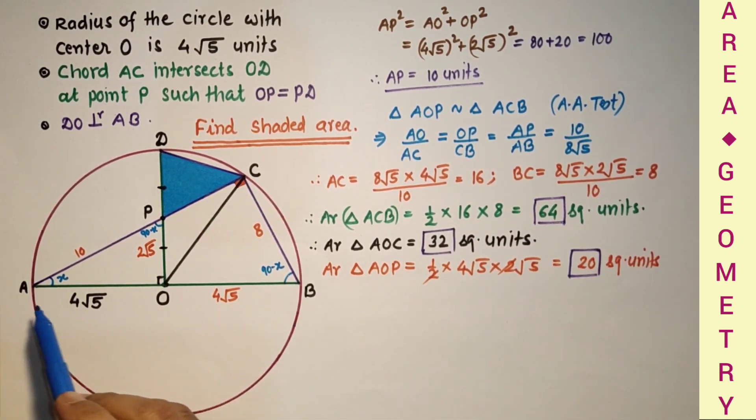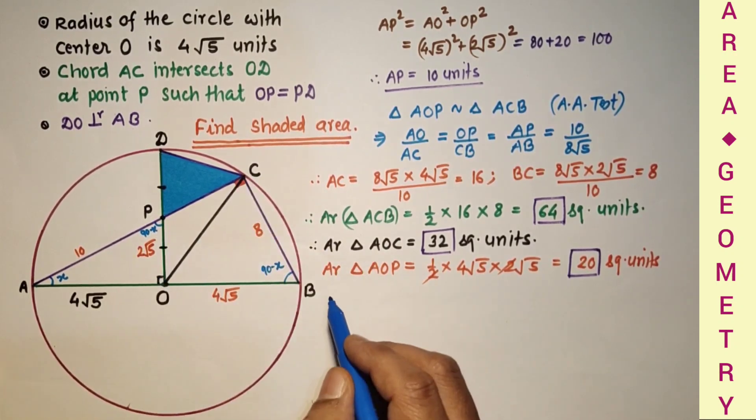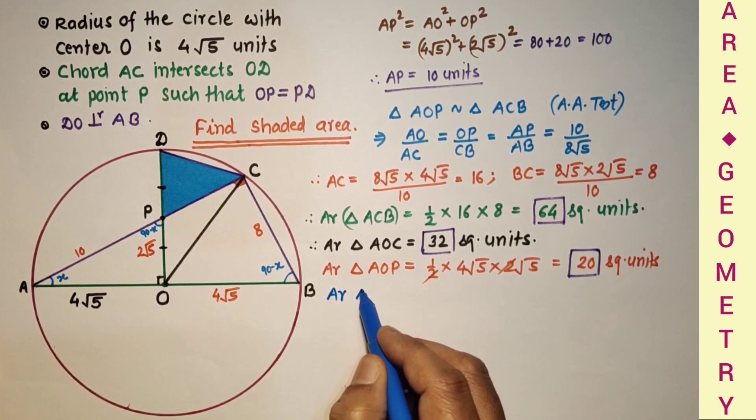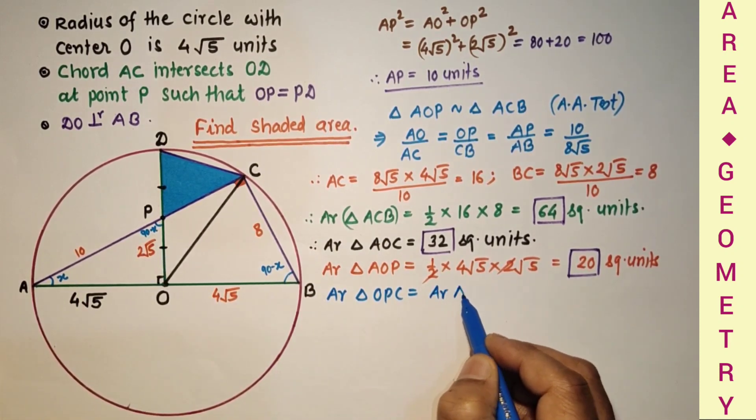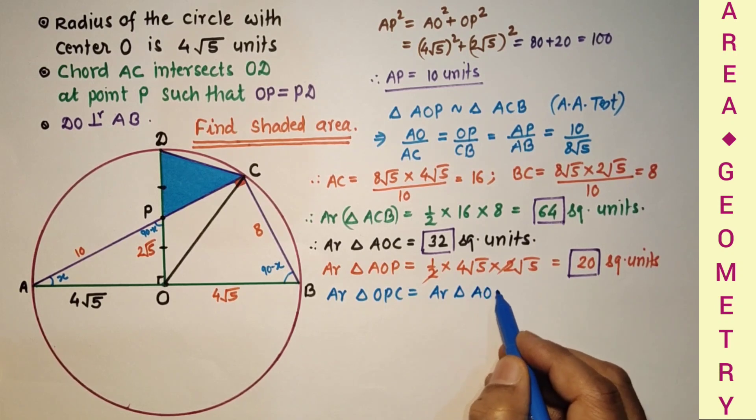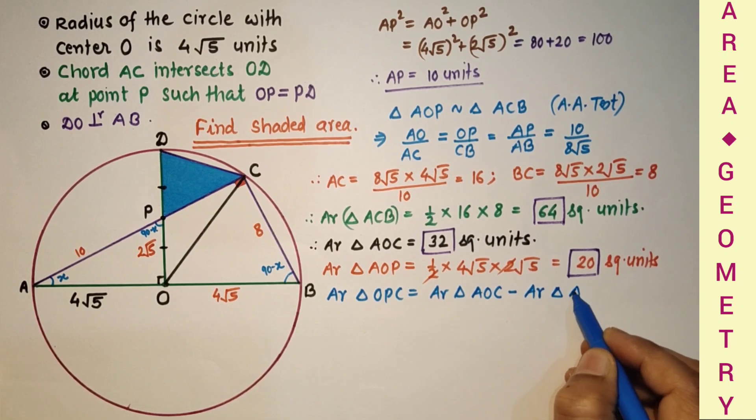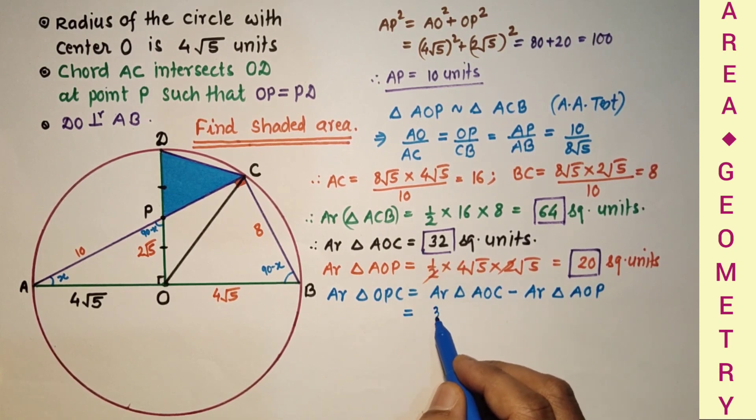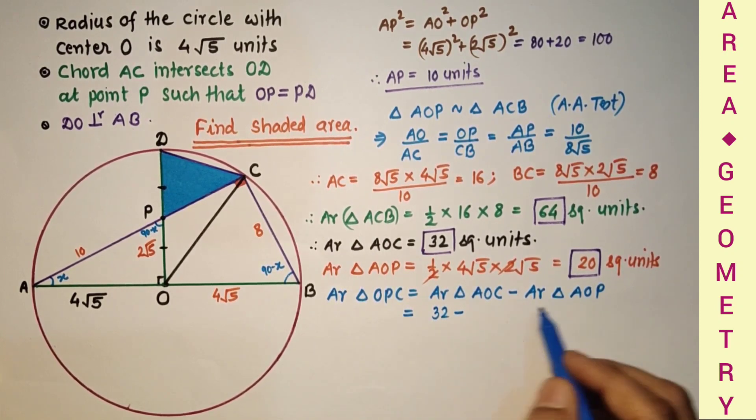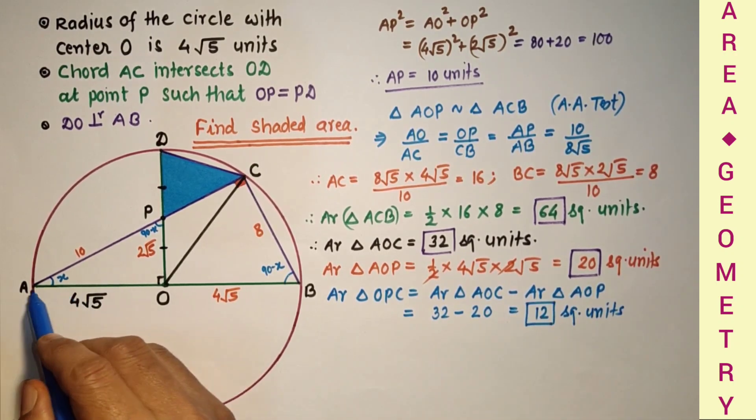After getting the area of triangle AOP, we can find area of triangle OPC. Area triangle OPC equal to triangle AOC minus area of triangle AOP. So that is equal to area triangle AOC we found 32 minus this is 20, which is equal to 12 square units. This area we found.